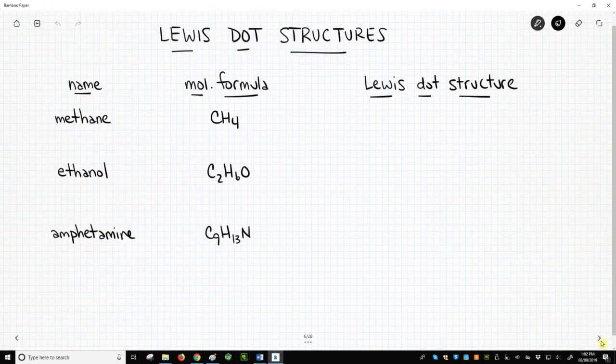On the left of the screen, we have three names of organic molecules: methane, ethanol, and amphetamine. We also have the molecular formula for each molecule. A molecular formula is great for communicating the composition of a molecule, but does not give any useful structural information. In other words, molecular formulas do not tell us how the atoms in the molecule are connected to one another.